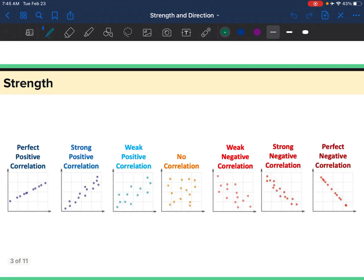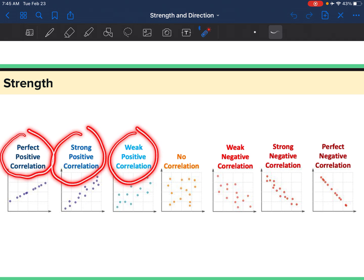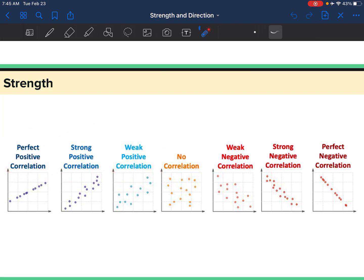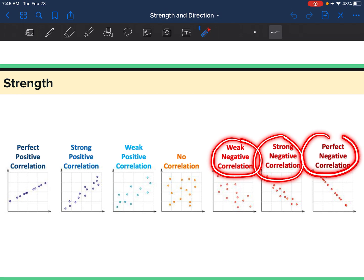You probably have seen this graphic before. We have a lot of different scatterplots here, and there are a couple different ways that we can describe it with the word perfect, strong, weak, or no correlation. And you can see it repeats again: weak, strong, and perfect.